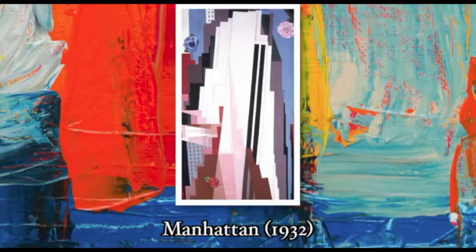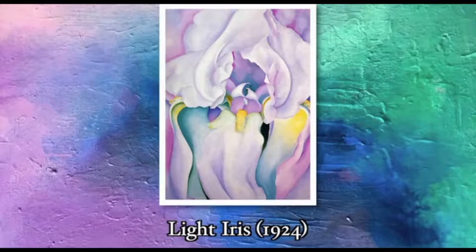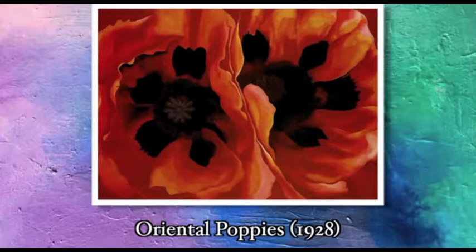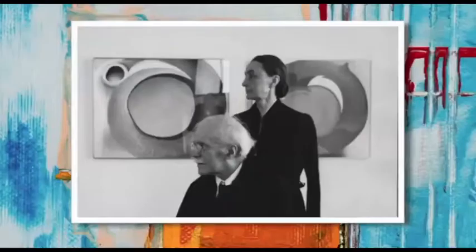Georgia used a distinctive style to create dynamic paintings. At this time, she also began painting close-ups of flowers — the art she is perhaps most famous for. Taking small details of flowers and putting them on large canvases, magnifying and transforming them into something abstract, with bright colours and bold brush strokes.